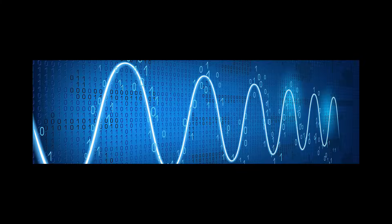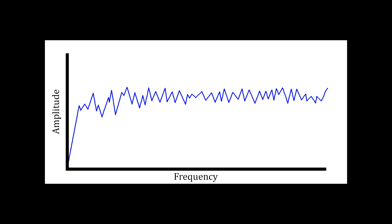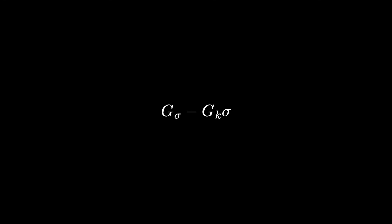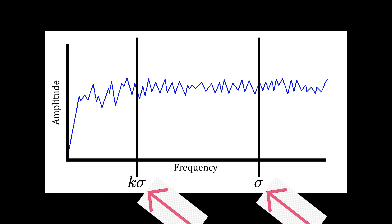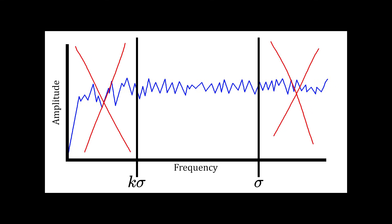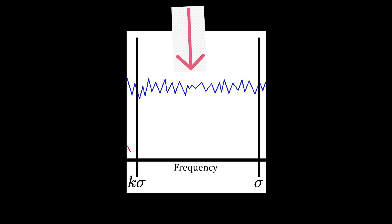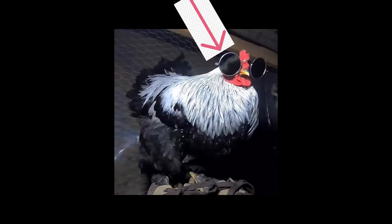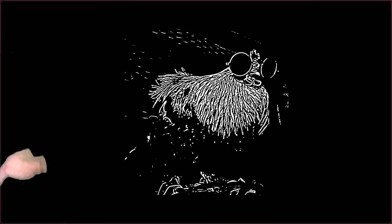But how is it even possible that the difference of two Gaussian blurs results in effective edge detection? In signal processing, the Gaussian function is what's known as a low-pass filter, meaning that given a signal, high frequencies will be suppressed, while the lower frequencies are left alone. This suppression is determined by the standard deviation of the Gaussian function, and since we have two Gaussian filters being applied with differing deviations subtracted from each other, we end up with a bandpass filter that only lets select frequencies through. Conveniently, these frequencies tend to be areas of high contrast, which usually corresponds to edges.